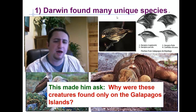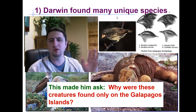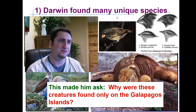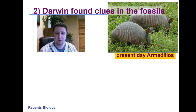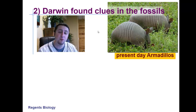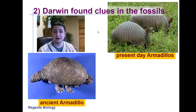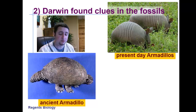When he was there looking at all these different animals, he began to ask why these creatures are really only found on the Galapagos Islands. And he found some clues within fossils. If we take a look at a modern-day armadillo — armadillos are kind of cute creatures, they curl up into little balls when they get scared, they're kind of like roly-poly bugs except that they are mammals. And we find that wherever there are present-day modern-living armadillos, there are fossils of armadillos, or at least creatures that resemble armadillos — very similar-looking creatures within the fossil record.